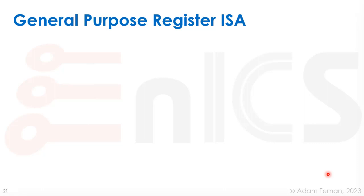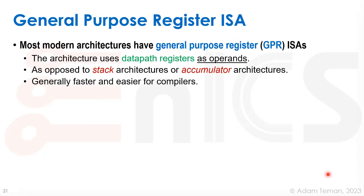Most modern architectures are based on general purpose registers — they are general purpose register ISAs. This type of architecture uses data path registers for its operands, as opposed to stack architectures or accumulator architectures. It is usually faster and easier for compilers to deal with a GPR ISA.